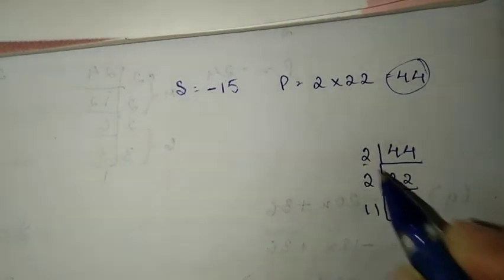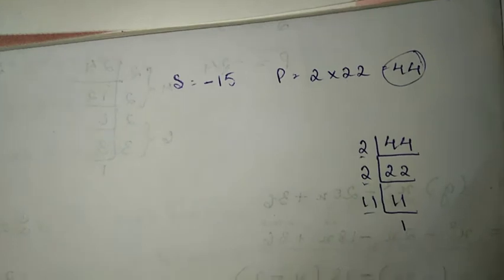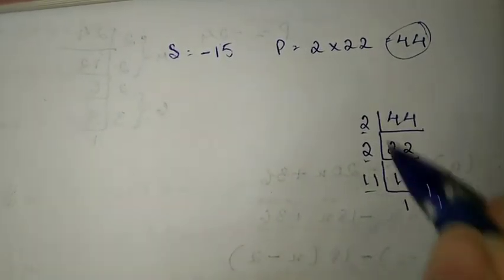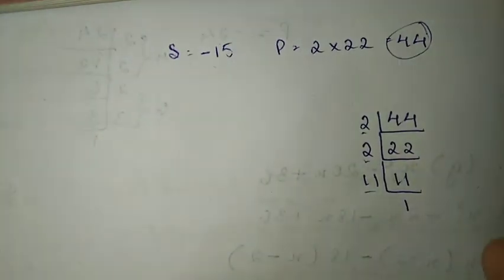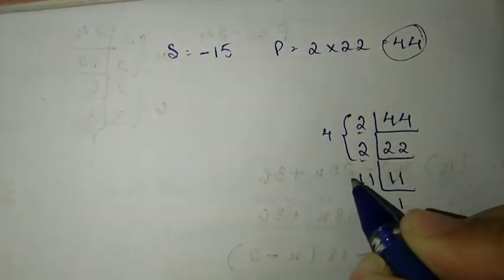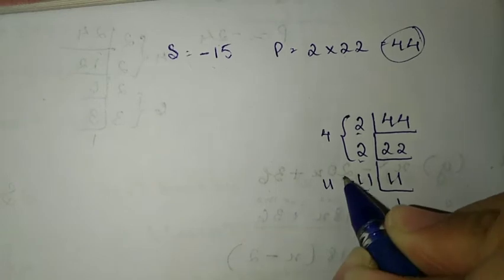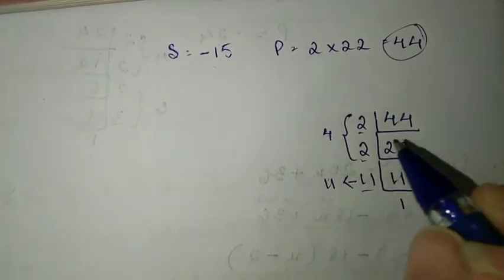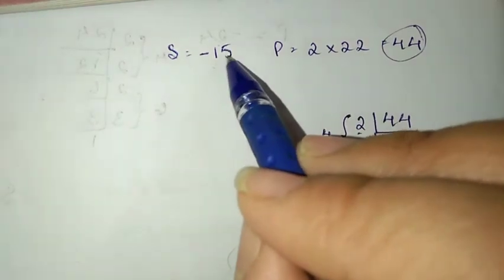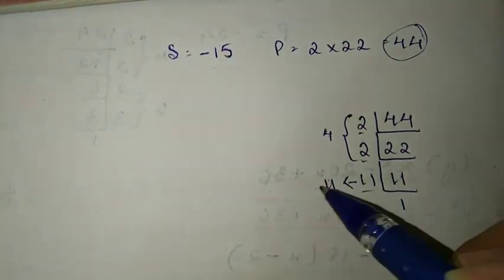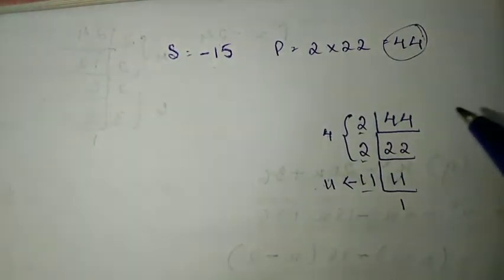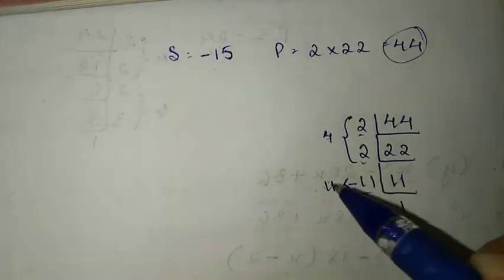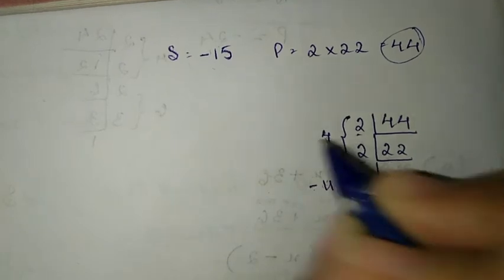22 is 2 into 11. So 11 times 1 is 11. Now in combination, when you add or subtract them, you must get minus 15 over here.